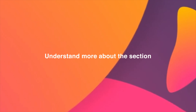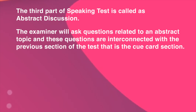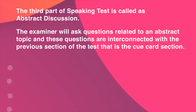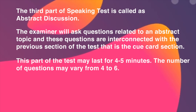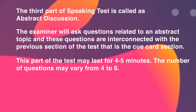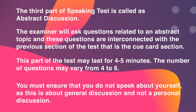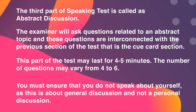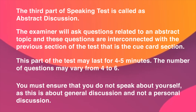Let's understand what this section is. The third part of the speaking test is called abstract discussion. The examiner will ask questions related to an abstract topic, and these questions are interconnected with the previous section of the test, i.e., the cue card section. This part of the test may last for 4 to 5 minutes, and the number of questions may vary from 4 to 6. You must ensure that you do not speak about yourself, as this is about general discussion and not a personal discussion.